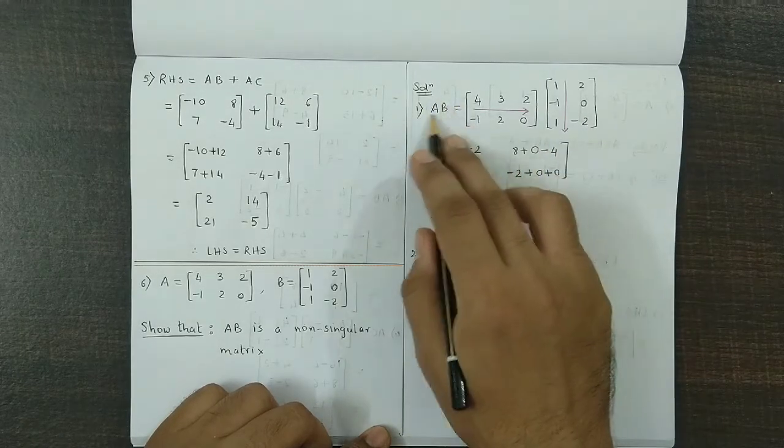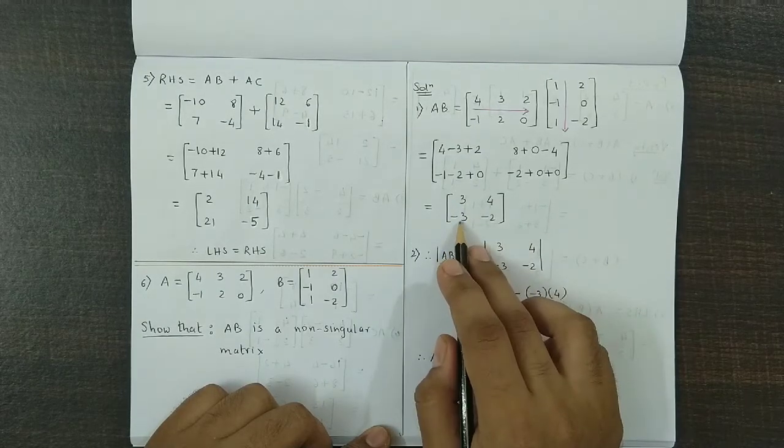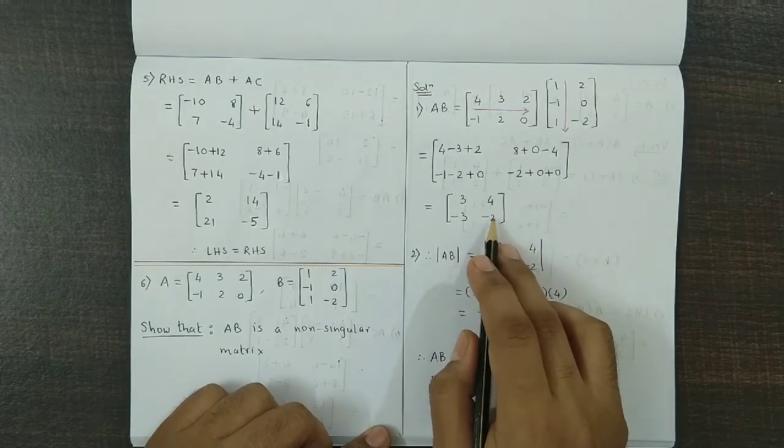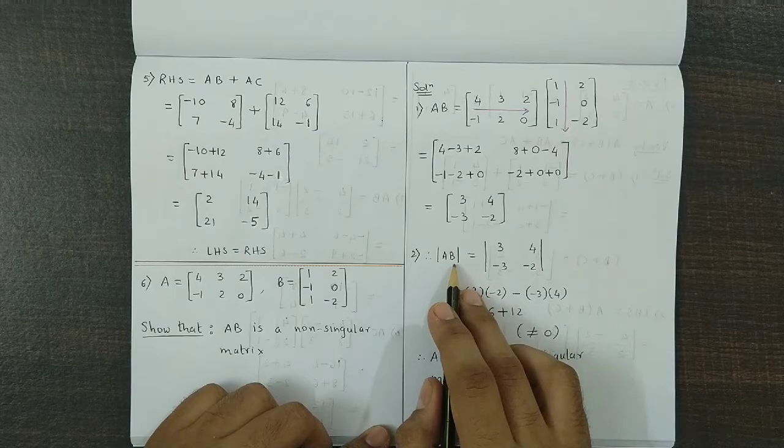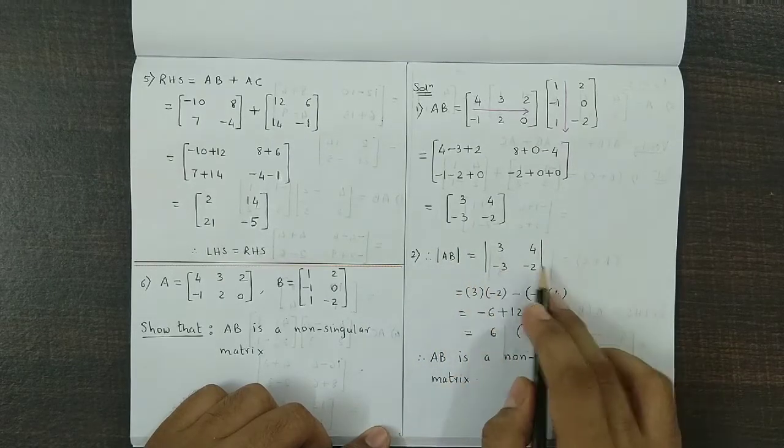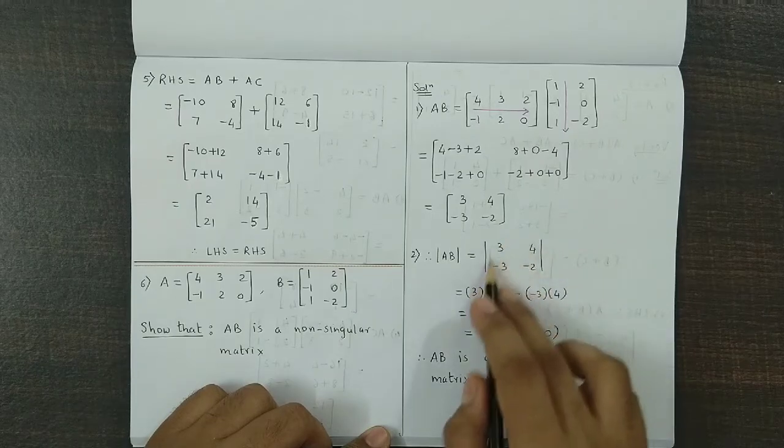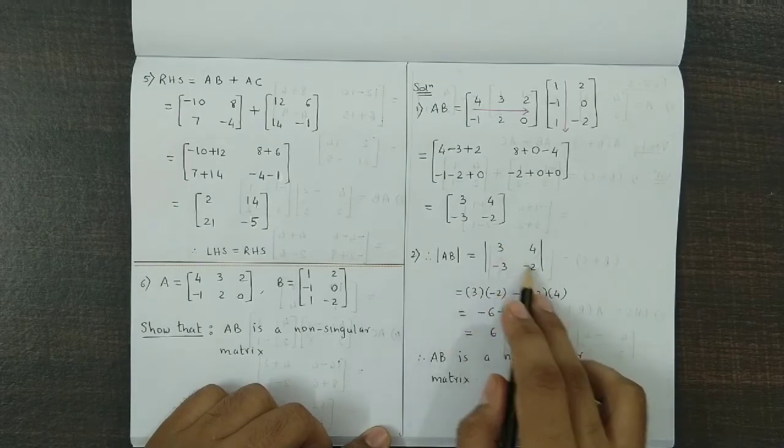R2 into C2, so we have minus 2, then plus 0, again plus 0, so minus 2 plus 0 plus 0. So the product AB is 3, 4, minus 3, minus 2. Now we obtain its determinant value. So determinant of AB is determinant of 3, 4, minus 3, minus 2.